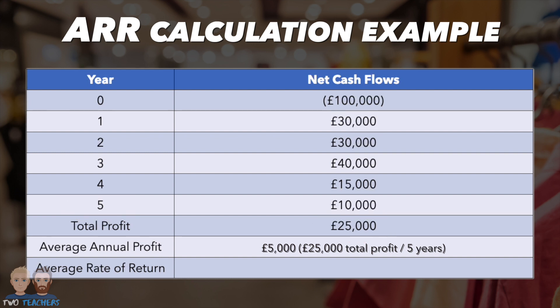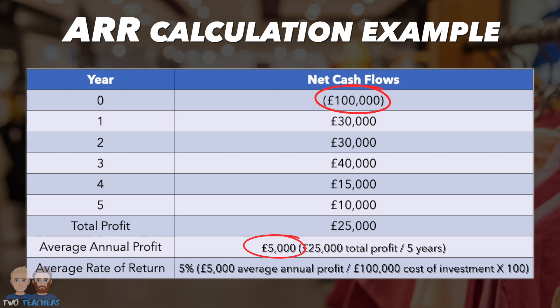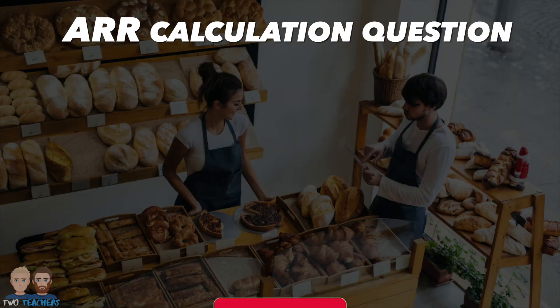Now, you can divide this average annual profit figure of £5,000 into the cost of the investment, which in this scenario is £100,000, and multiply the result by 100, providing you with an answer of 5%. This is the average rate of return for the investment.